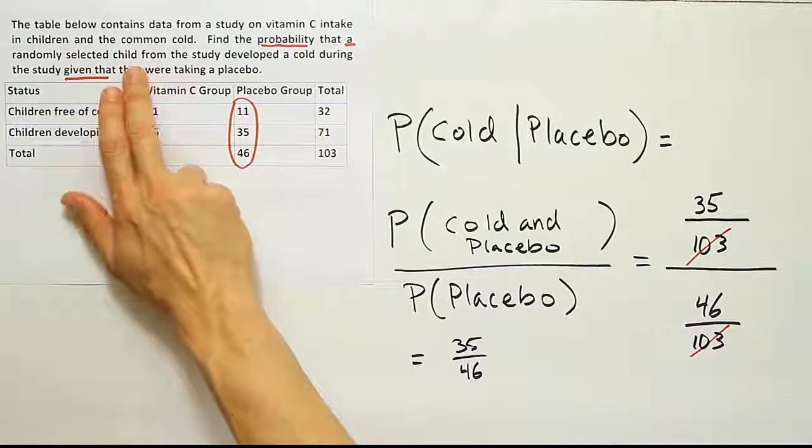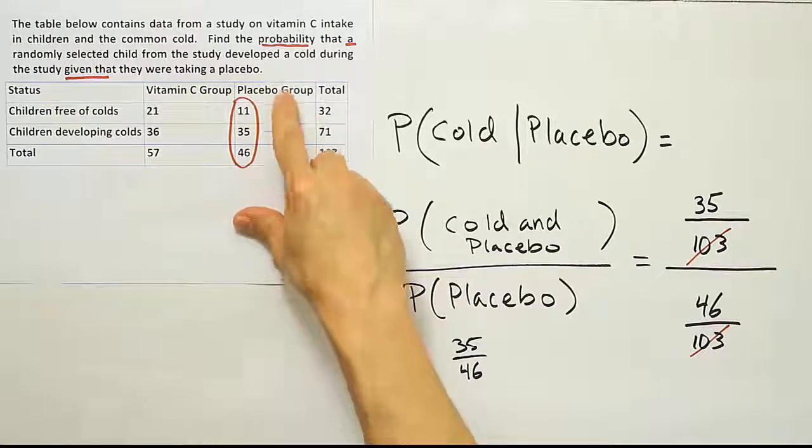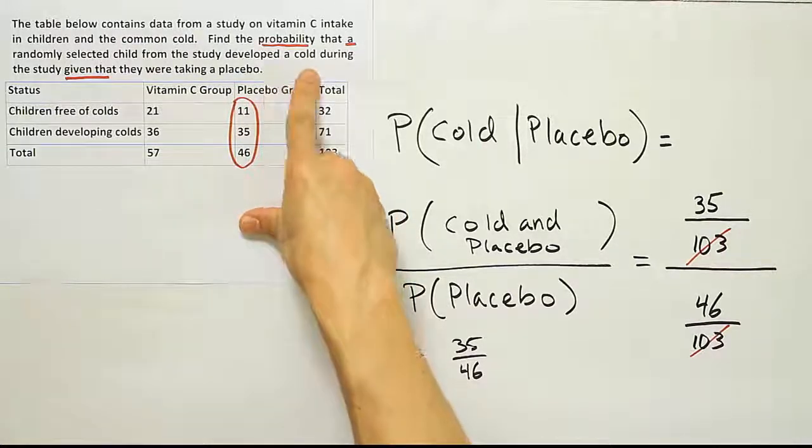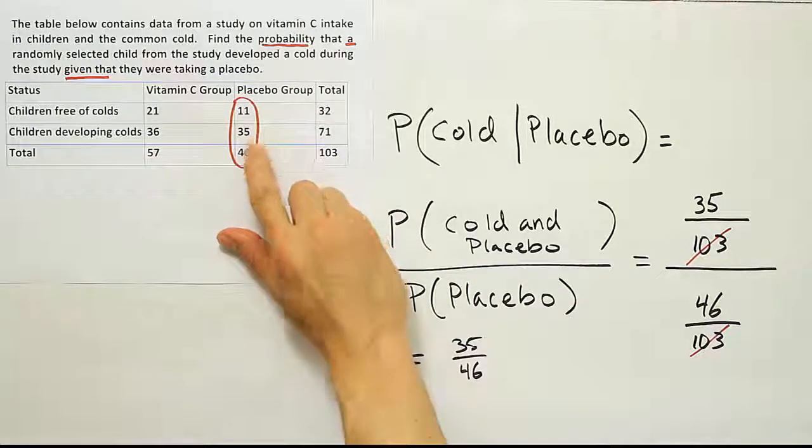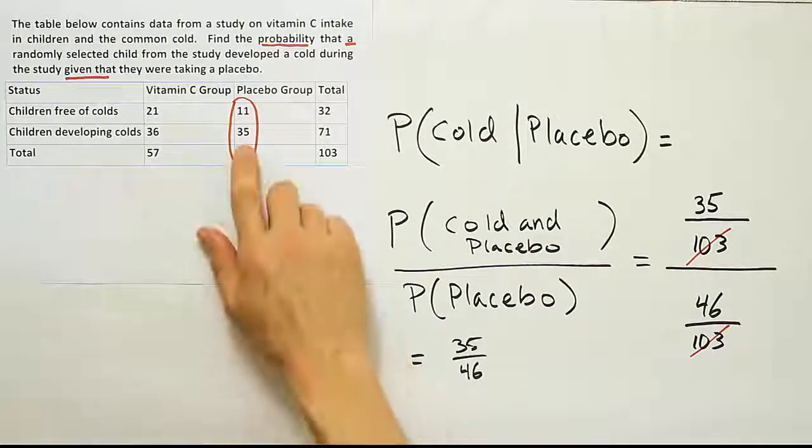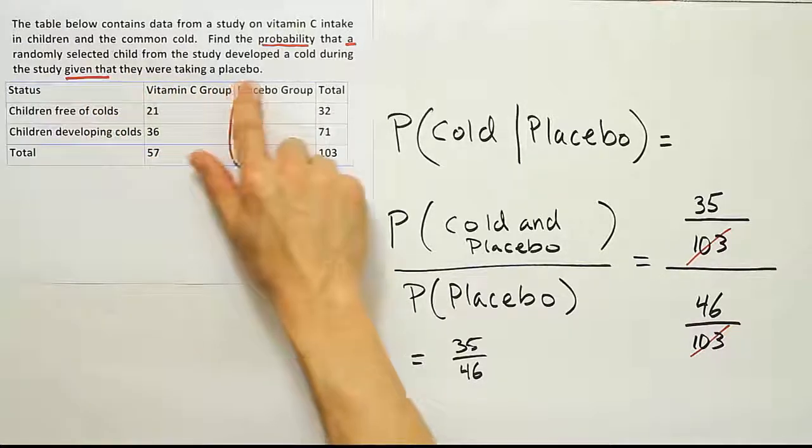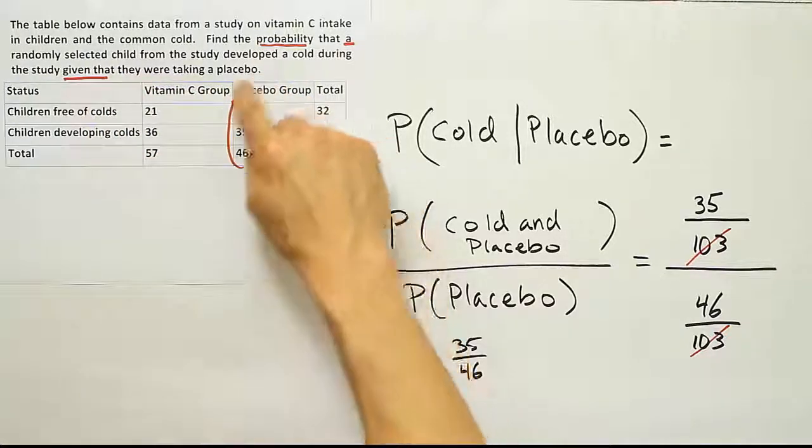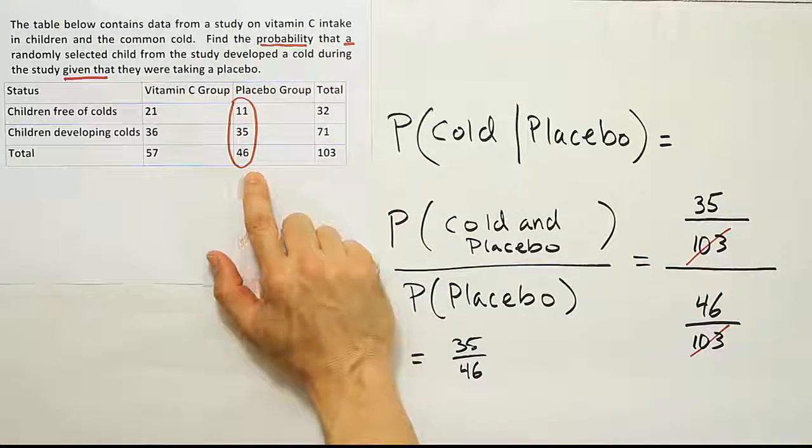And they're asking, find the probability that a child from the study developed a cold. So what they're saying is among the placebo group, what number of them developed a cold? So you would say the number who developed cold is 35 over the total 46. So the shortcut approach is pretty simple. What you want to do when you're using the shortcut method is to say, look, I focus on whatever follows the phrase given that. In this case, it's taking a placebo. Identify that column or row, depending which one it is. In this case, it's a column. So identify that and only look at these numbers.